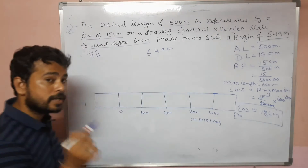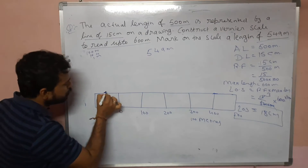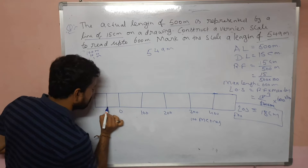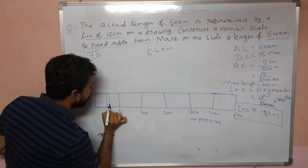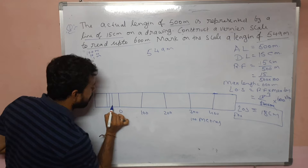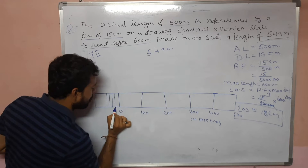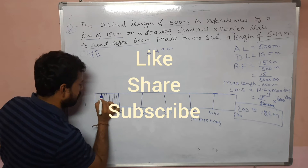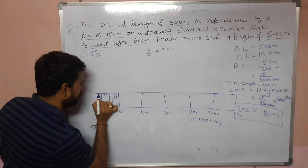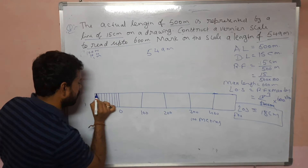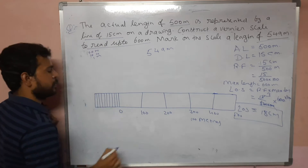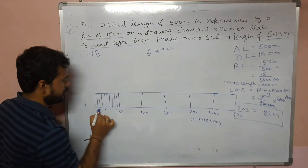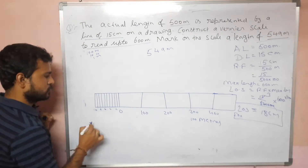Next, cover 10 meters — divided into 10 equal parts. Zero, one, two, three, four, five, six, seven, eight, nine, ten — so each division represents 10 meters.